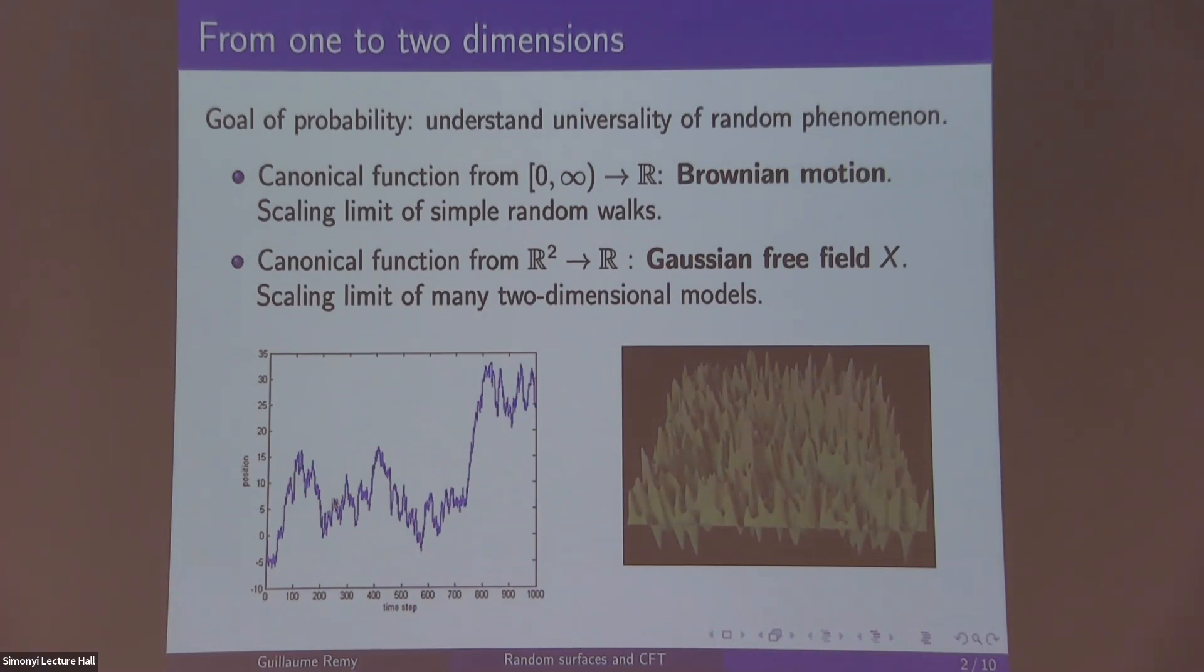It appears as a scaling limit of simple random walks and appears in many contexts. In a sense, it captures some universal behavior. Now if we do in two dimensions, if you make your time space two-dimensional, you look at functions from R² to R.